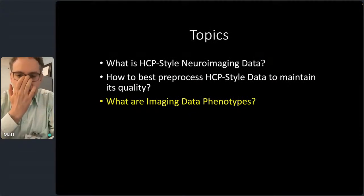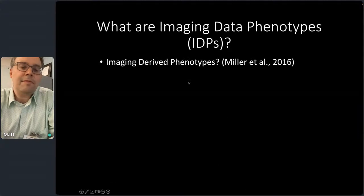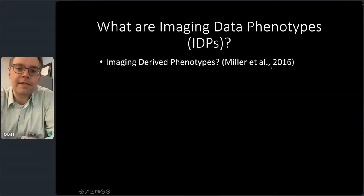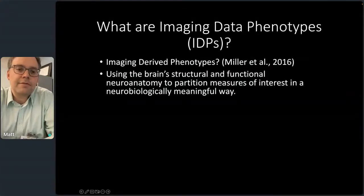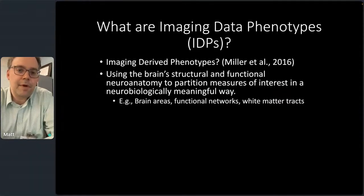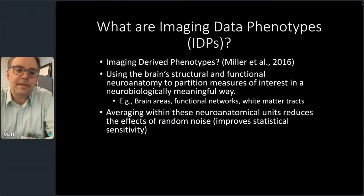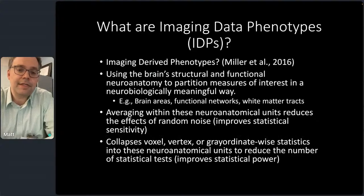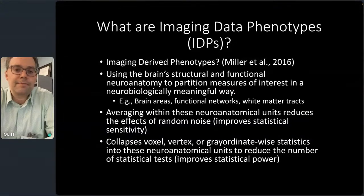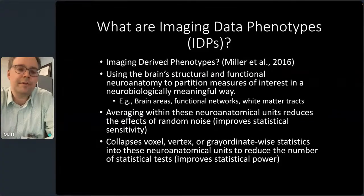I'll close with the concept of imaging data phenotypes (IDPs) — also termed imaging derived phenotypes by Carla Miller, Steve Smith, and the UK Biobank folks. The basic idea is to use brain structural and functional neuroanatomy to partition measures of interest in a neurobiologically meaningful way, using things like brain areas, functional networks, or white matter tracts. Averaging within these neuroanatomical units helps reduce random noise, improving statistical sensitivity, while also reducing the number of statistical tests — improving both sensitivity and power.